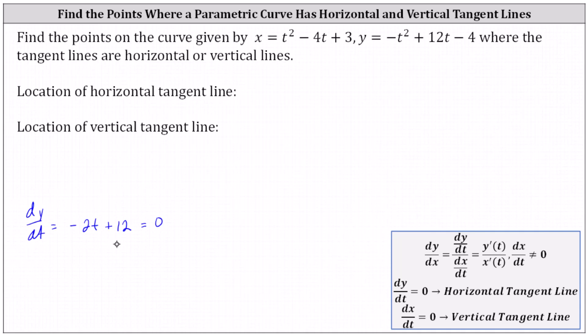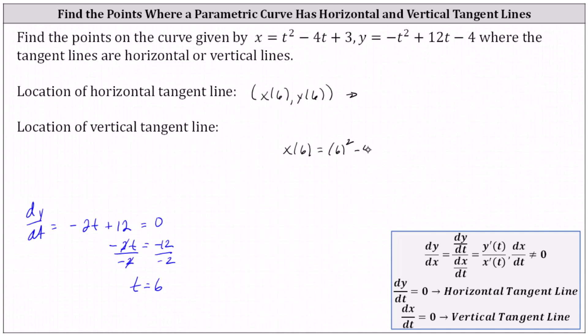To solve for t we subtract 12 on both sides, which gives us negative 2t equals negative 12. Dividing both sides by negative 2 and simplifying we have t equals positive 6. Now we need to use t equals 6 to determine the point at which we have a horizontal tangent line using the parametric equations. x of 6 is equal to the square of 6 minus 4 times 6 plus 3, which is 36 minus 24 plus 3, which is 15.